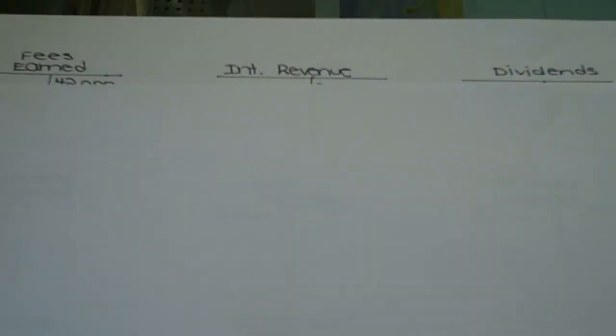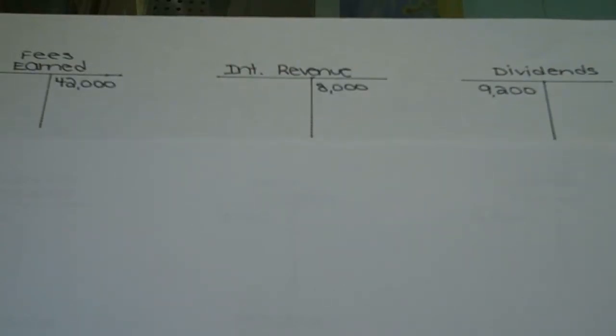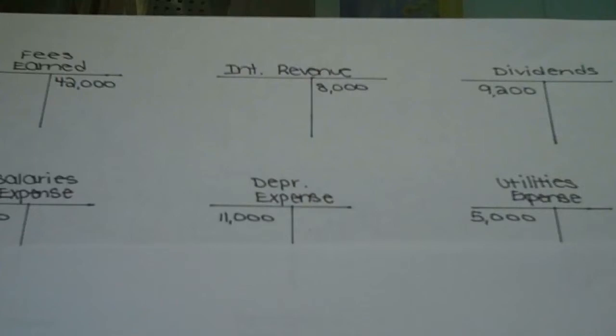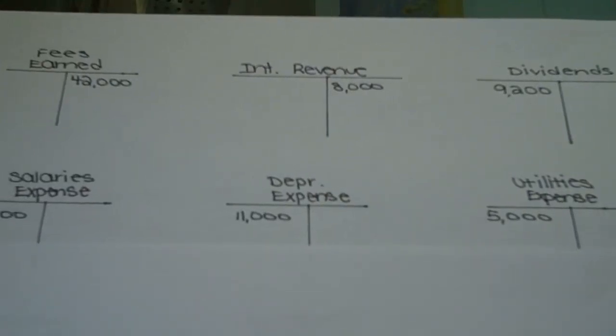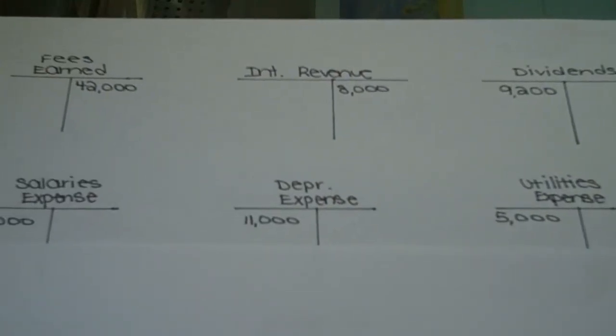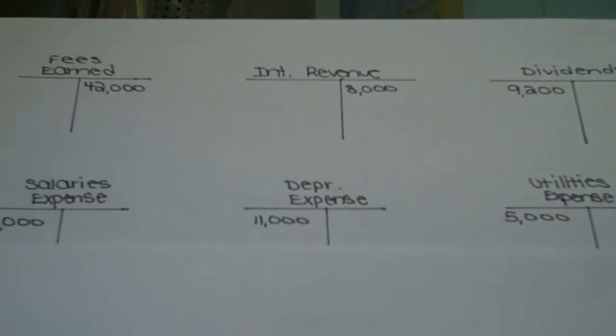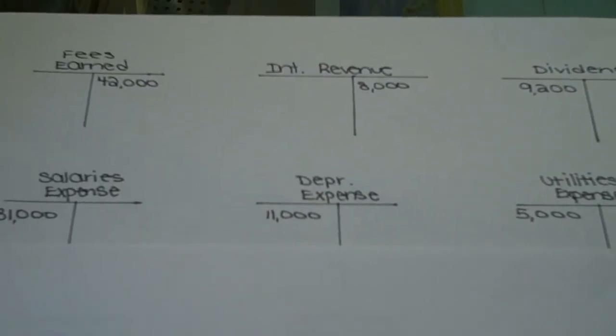I set this problem up by creating T accounts for all of the information given in the problem. They gave you six accounts: fees earned, interest revenue, dividends, salaries expense, depreciation, and utilities expense, as well as the beginning balances for each of those accounts.